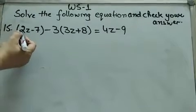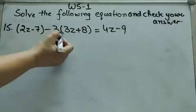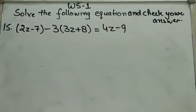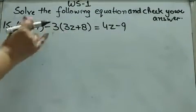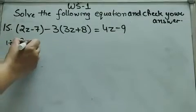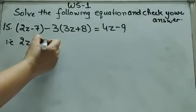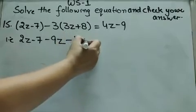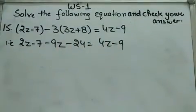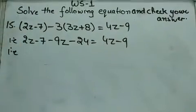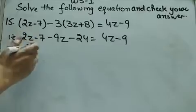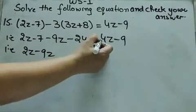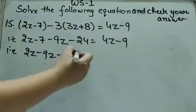Next question: solve the given equation 2z minus 7 minus 3 into (3z plus 8) equal to 4z minus 9. Same way, left hand side को पहले simplify करना है — bracket को expand करेंगे: 3 into 3 gives 9z, minus into plus gives minus 24. Equal to 4z minus 9. Left hand side and right hand side दोनों simplified form में हैं। अब variable वाली terms एक तरफ: 2z minus 9z. जो 4z है, transposing के time plus changes to minus — left hand side में आते ही minus हो जाएगा।